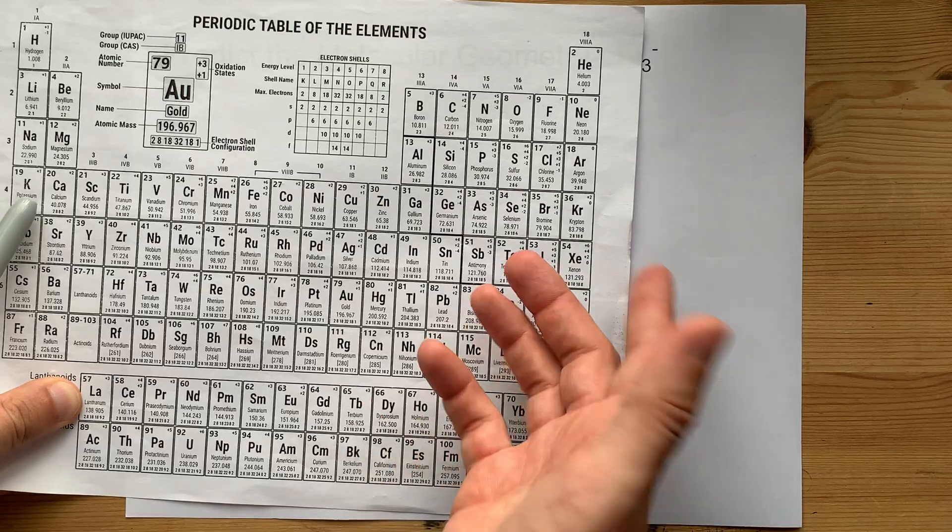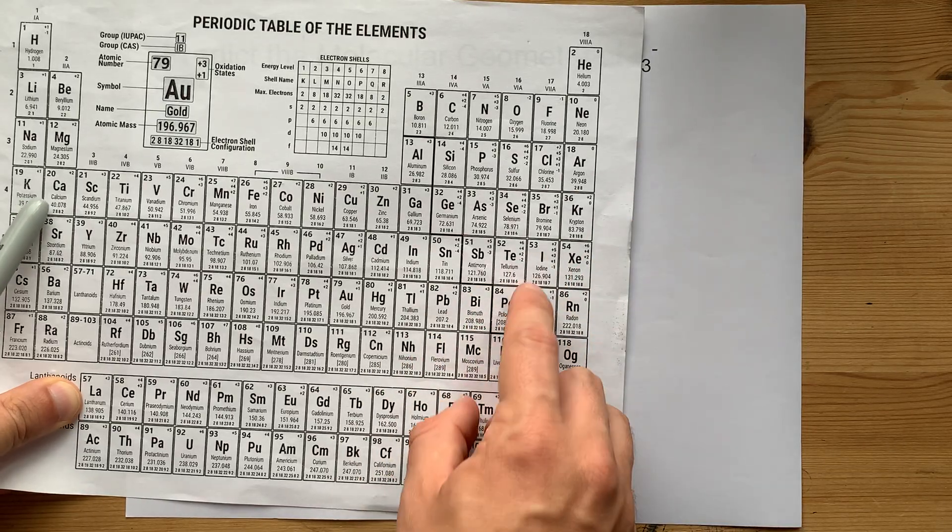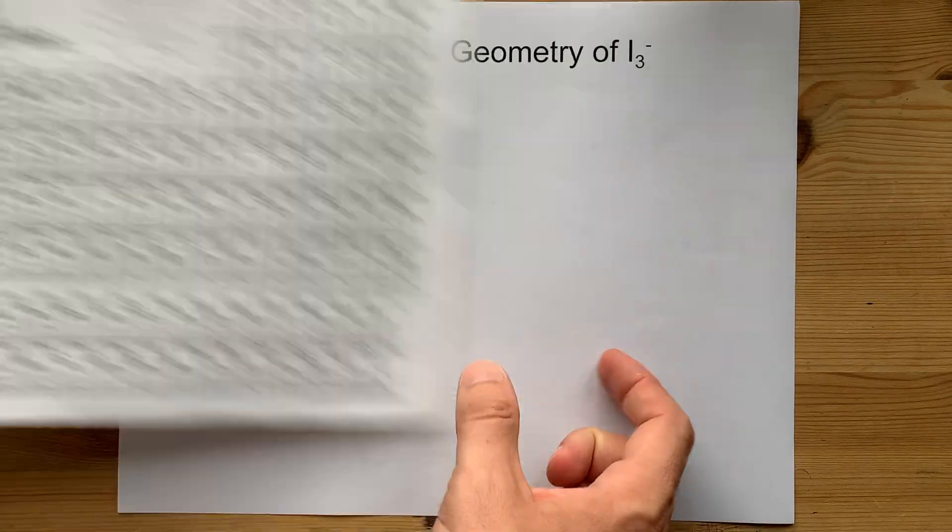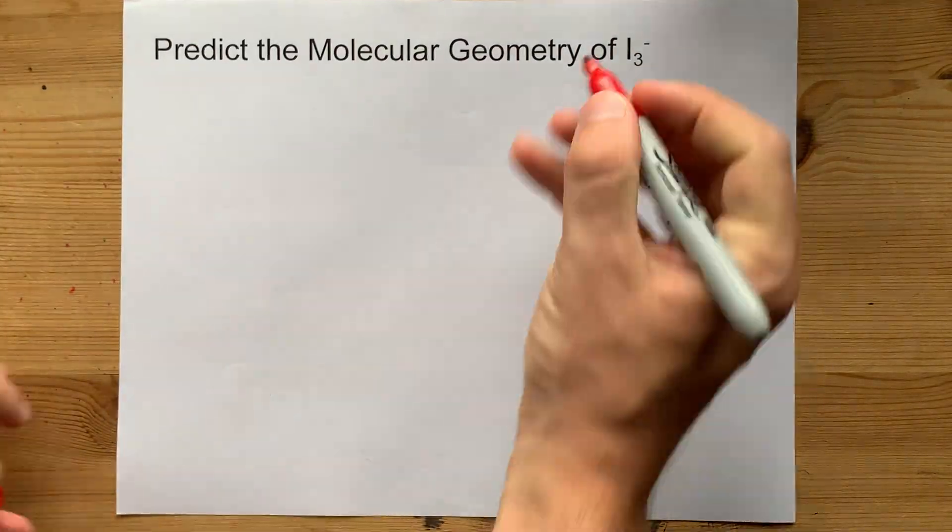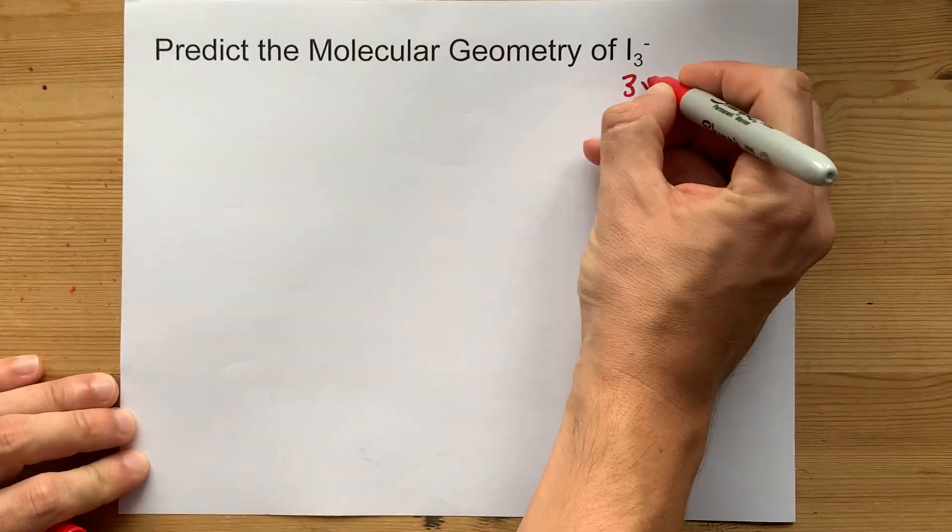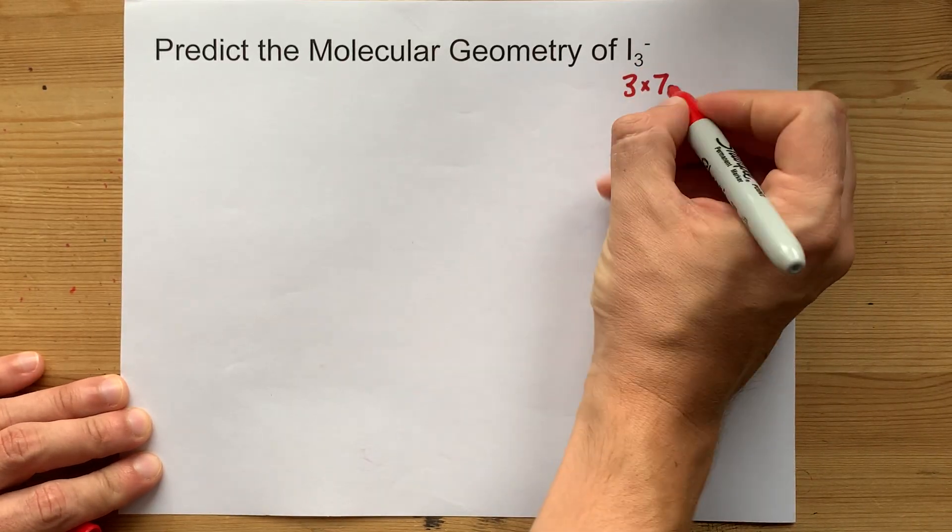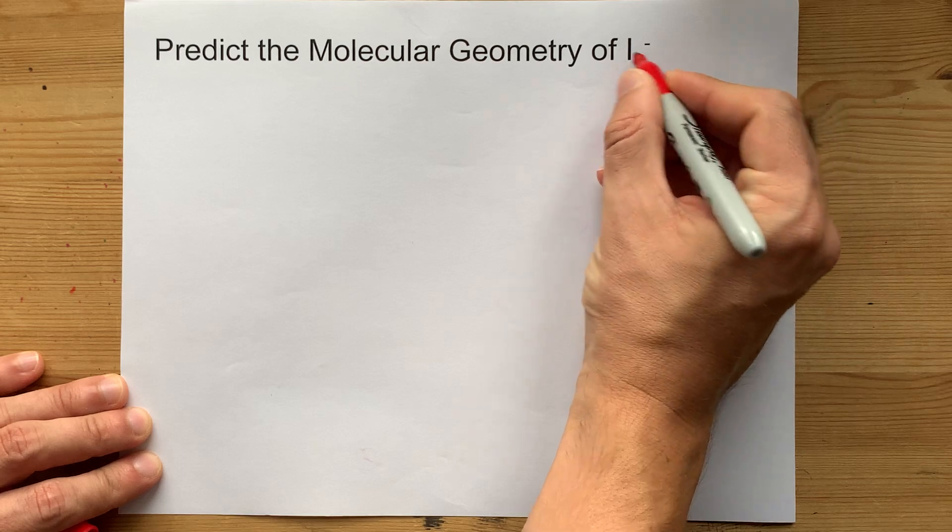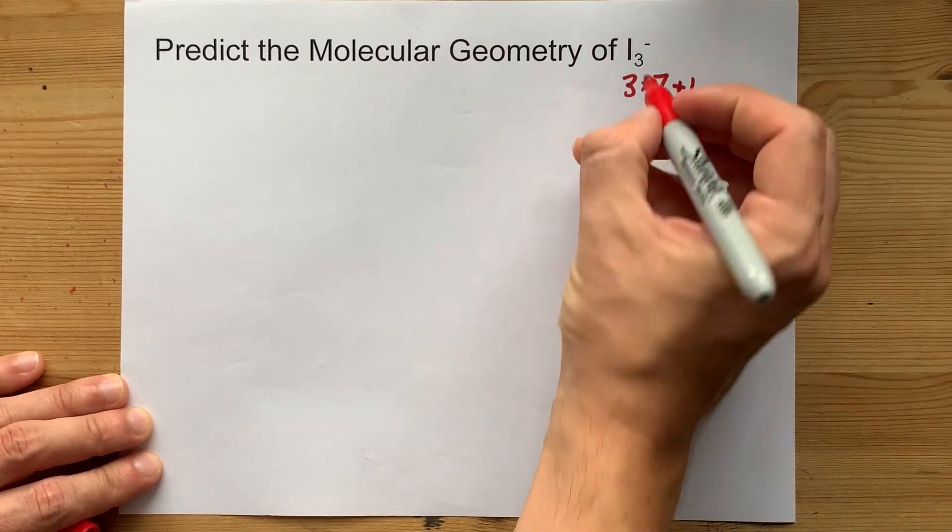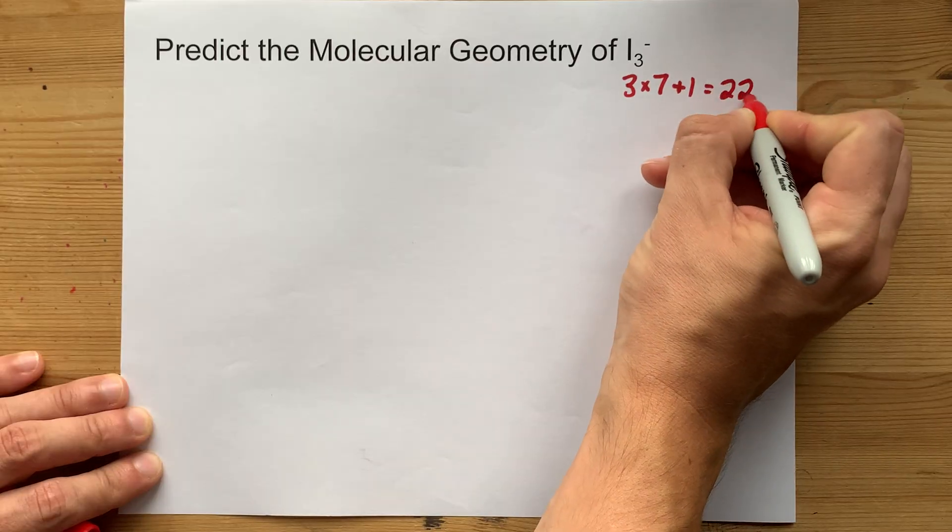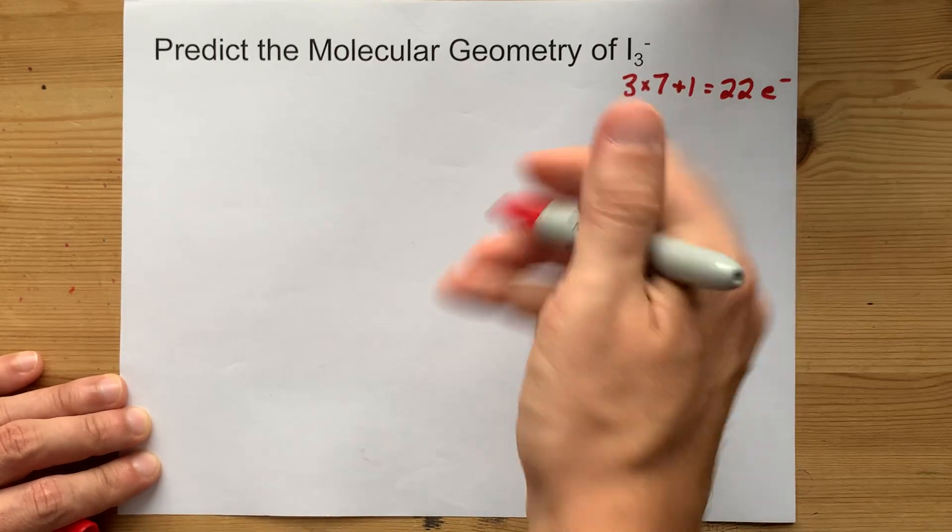Iodine is a non-metal. They will make covalent bonds with each other. Iodine brings seven valence electrons with it. So three iodines bring three sets of seven electrons each, and there's an extra electron for the fact that there's a minus one charge in this ion. That's 21 electrons plus one gives me 22 valence electrons to deal with total.